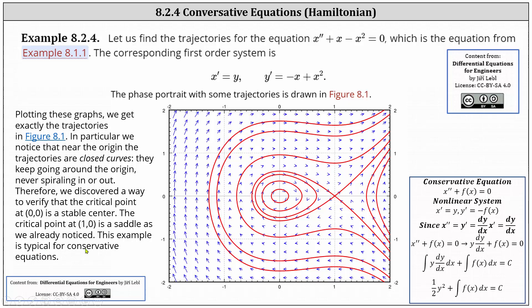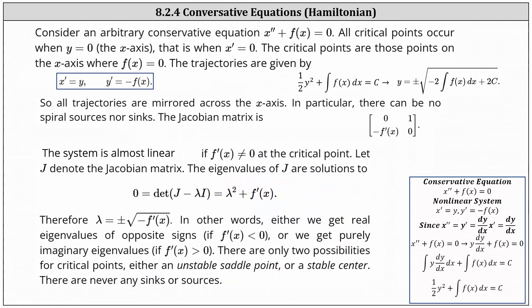Now let's consider an arbitrary conservative equation, x double prime plus f of x equals zero. Recall the equivalent system is x prime equals y and y prime equals negative f of x. All the critical points occur where x prime and y prime are both equal to zero. This indicates they occur when y equals zero along the x-axis, and the critical points are those points on the x-axis where f of x equals zero. Recall the trajectories are given by one half y squared plus the integral of f of x dx equals c, which in the most general case gives y equals plus or minus the square root of negative 2 times the integral of f of x dx plus 2c.